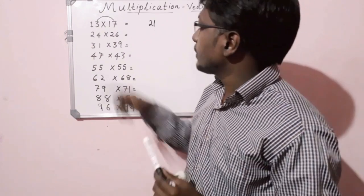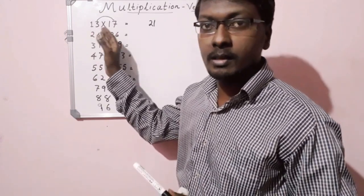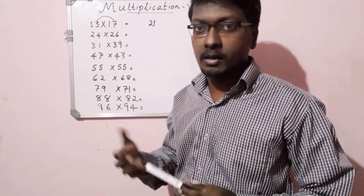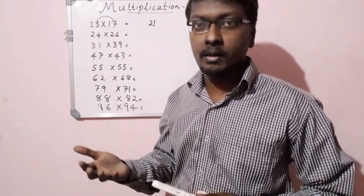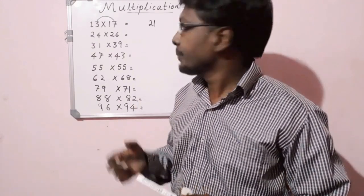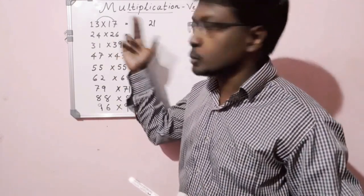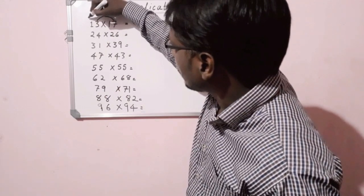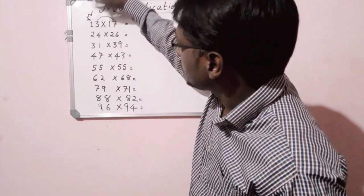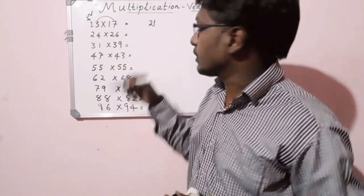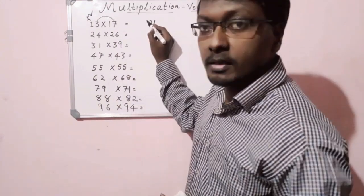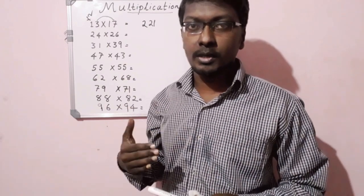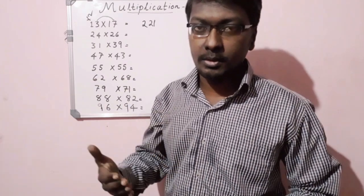We multiply 1 into 1, then 1 into the next number. We multiply 2 into 1, then 1 into 2, which gives 2. Then we multiply to get 2. That is our answer: 21 and 22. We get the answer.